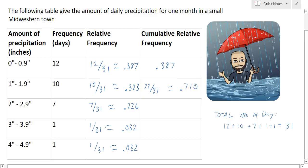And what this means is 71% of the days had 1.9 inches of precipitation or less. So the next cumulative relative frequency, I just take the 71% and add the next category, or I take 22 over 31 and add 7 over 31. So the cumulative frequency is 29 out of 31, or 0.936.